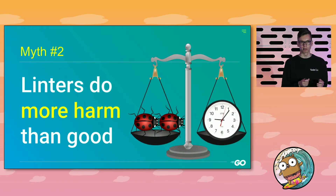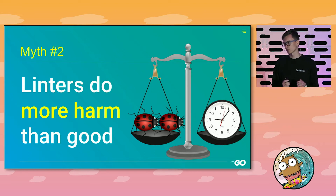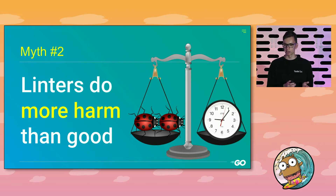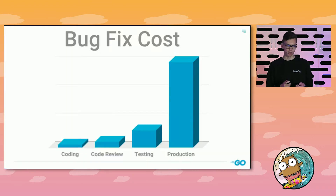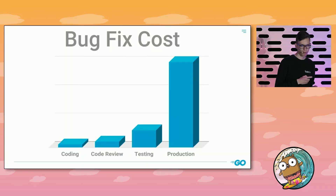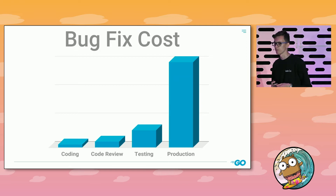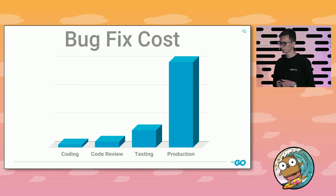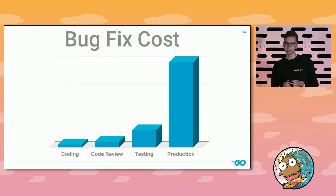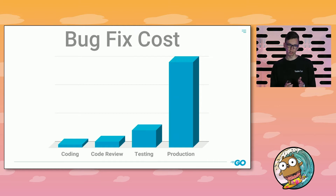The second myth: some say linters can find real bugs, okay, but do linters do more harm than good? First, the primary benefit of linters is development cost reduction. If you find bugs earlier — for example, if you run linters locally after writing code — you've found it at the coding stage, and it will cost the company much less money than finding it in production.